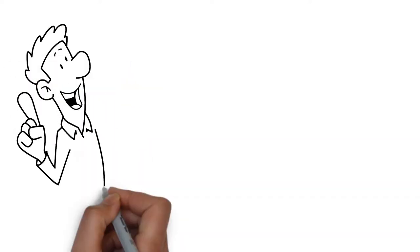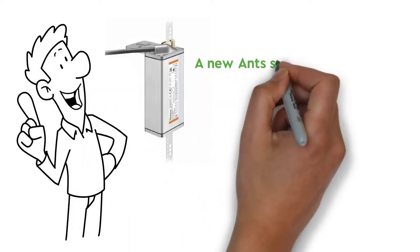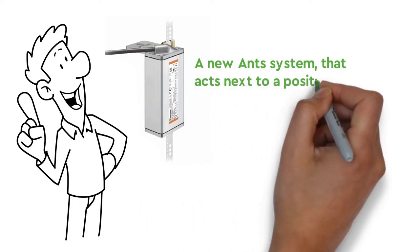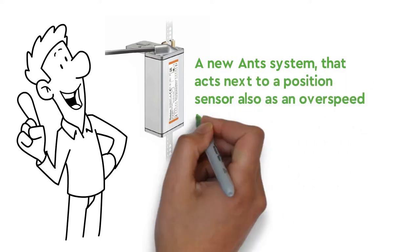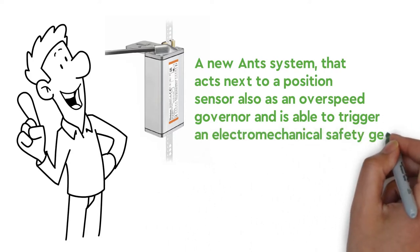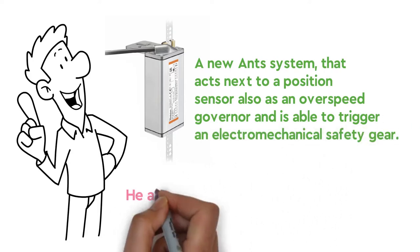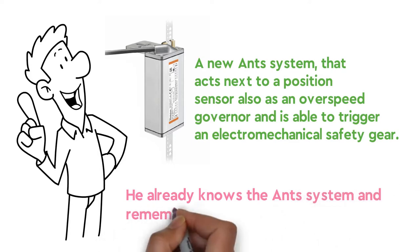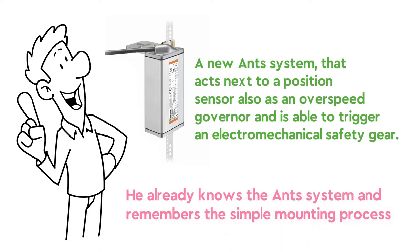John has heard of an innovative project, a new ANT system that acts next to a position sensor also as an overspeed governor and is able to trigger an electromechanical safety gear. He already knows the ANT system and remembers the simple mounting process.